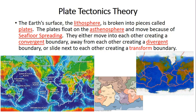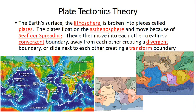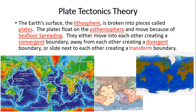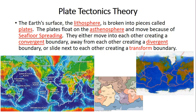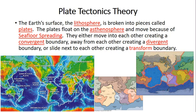So the plate tectonics theory is that the Earth's surface, the lithosphere, is broken into pieces called plates. The plates float on the asthenosphere and move because of sea floor spreading. They either move into each other, creating a convergent boundary, away from each other, creating a divergent boundary, or slide next to each other, creating a transform boundary.